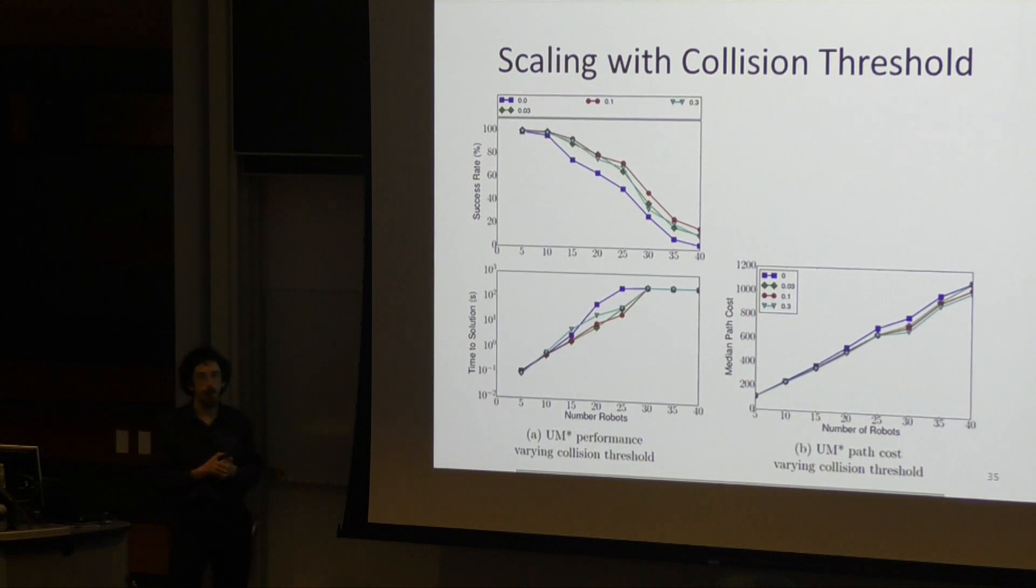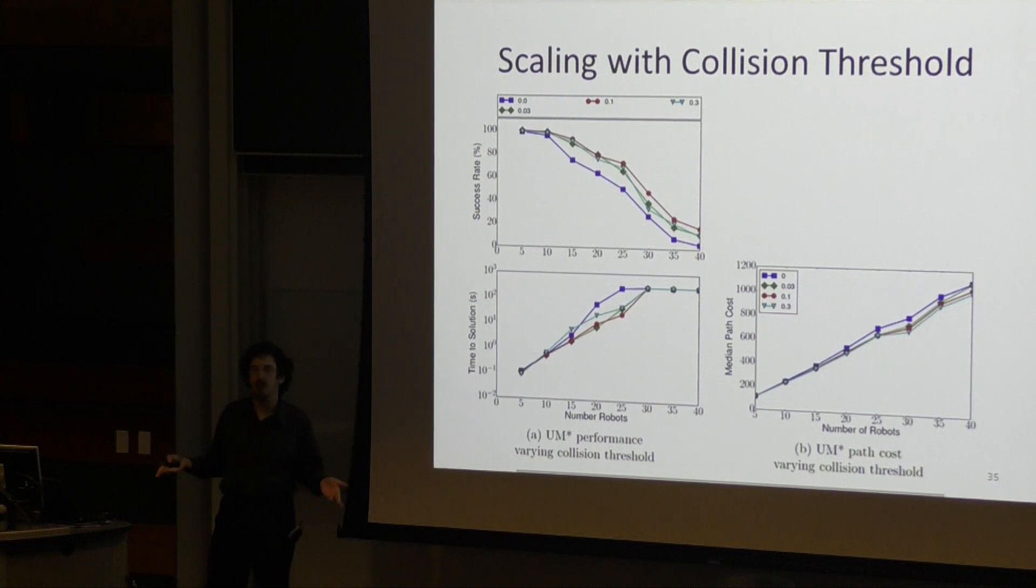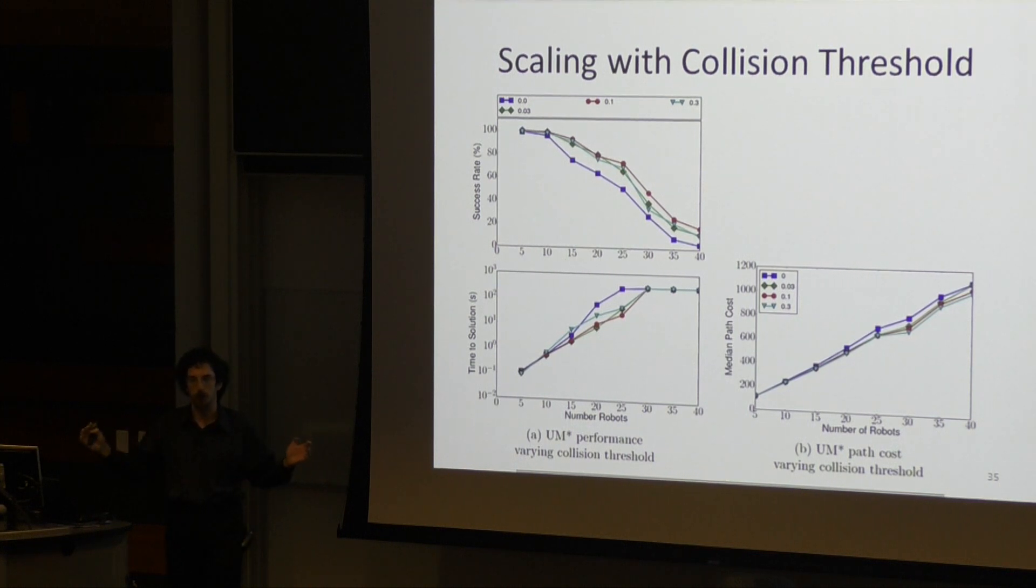Then there's a question of what happens when you vary your safety bound. So on the left you see success rate with a collision threshold ranging from 0% to 10% in the red, and then to 30% in that cyan. We see a non-monotonic increase in difficulty. Obviously, guaranteeing complete safety is hard because you have to keep the robots entirely away from each other.